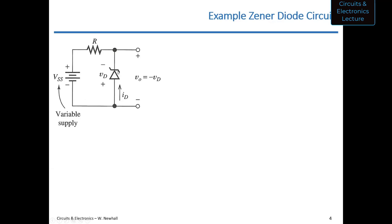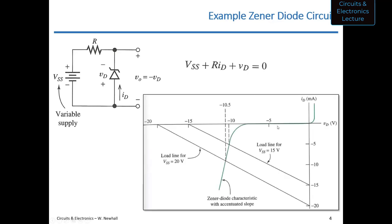Writing a KVL equation around this loop gives: −Vss + Id·Rd − Vd = 0, which you can rearrange. You can then compare what happens to the voltage across the diode as Vss changes by looking at the diode characteristic on a plot. We're interested in the lower-left quadrant of the Id versus Vd plot.